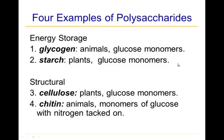I hope you're beginning to see why I emphasize the importance of glucose. A second category of polysaccharides are structural polysaccharides. Cellulose is a structural polysaccharide found in plants, made of glucose monomers. The fourth and final polysaccharide we're going to consider is chitin — a structural molecule found in animals, made of modified glucose monomers that have a nitrogen group attached.